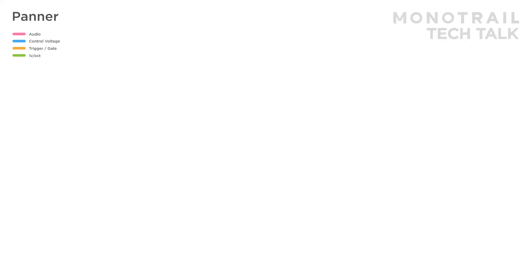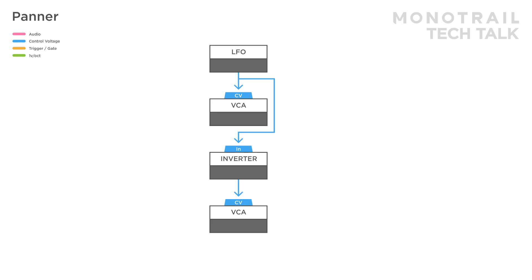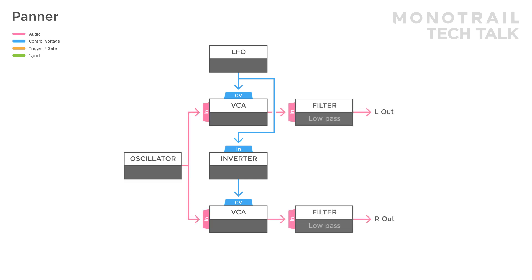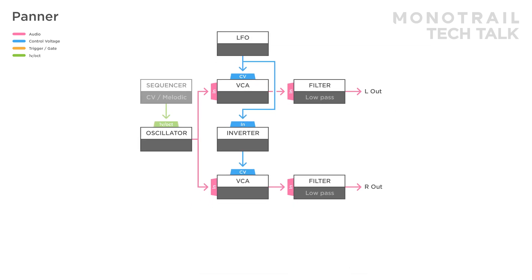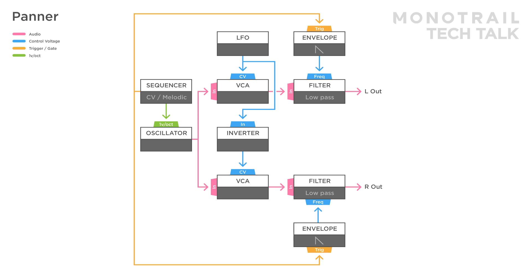You can use the same panning trick to distribute an audio signal anywhere in the patch. For example, here you see a single oscillator panned to two different filters to create a more extreme stereo effect. The oscillator is sequenced and triggering two envelopes modulating the filters.